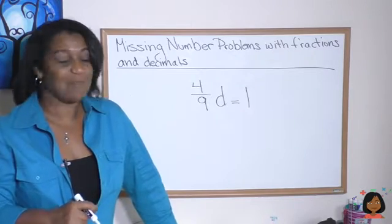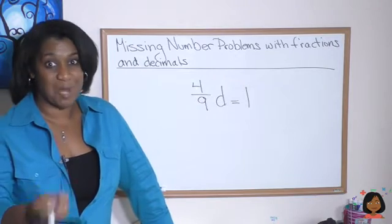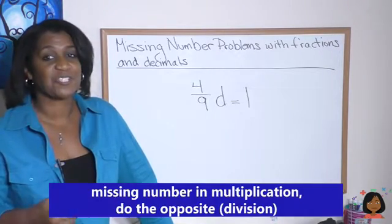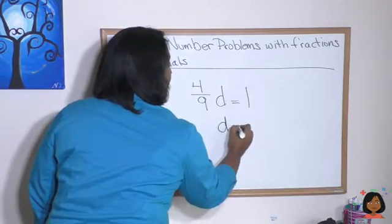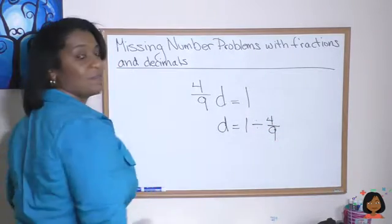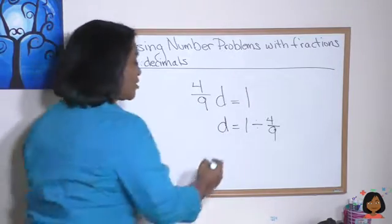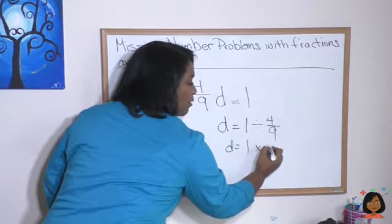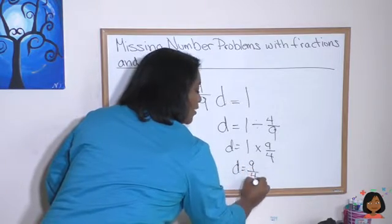Take a look at this problem. 4 9ths times D equals 1. So we have a missing number in multiplication. What do we do to find a missing number in multiplication? We do the opposite. We do division. So that means D equals 1 divided by 4 9ths. And we have learned that when we are dividing fractions, we do 1 times the reciprocal, which is 9 4ths. So D equals 9 4ths.